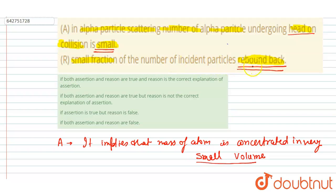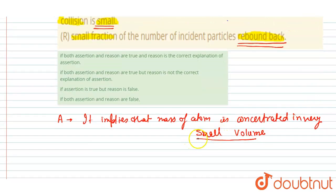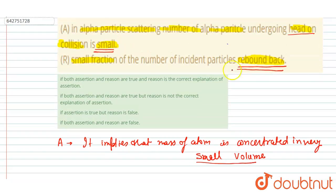Of the number of incident particles rebounds back, but the reason for this head-on collision is there is a small volume in which the whole mass of the atom is concentrated. So I will say B is the correct option: both are true but reason is not a correct explanation for the assertion. Thank you.